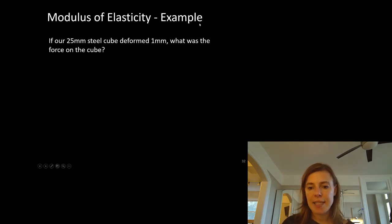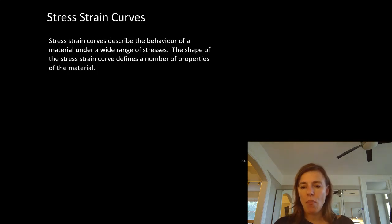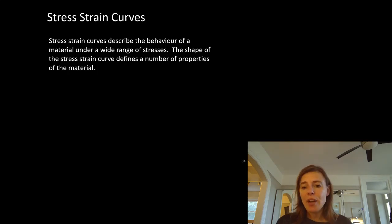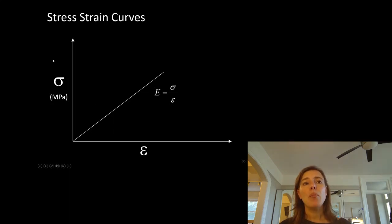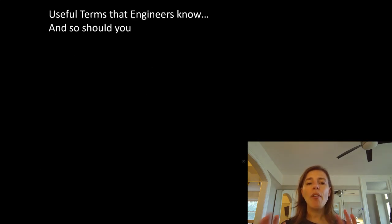Now let's talk about the stress and strain relationship. We already know the modulus of elasticity is the relationship between stress and strain in the normal range of things — we can draw that out. If we put stress on one axis and strain on the other, the modulus of elasticity is the line between them. In grade seven math terms, our equation is E = stress / strain. Here are a few terms you should know — and this diagram would make a fantastic exam question.